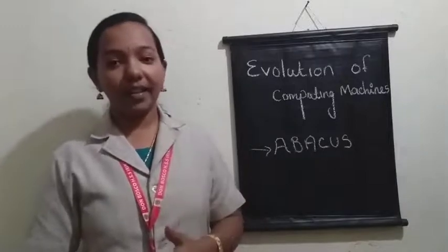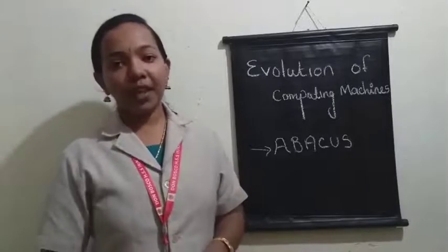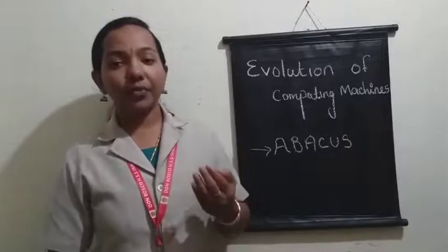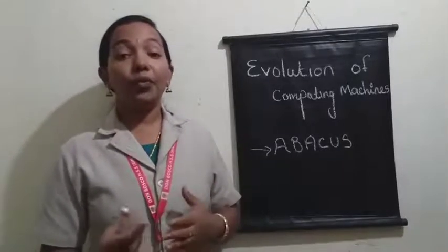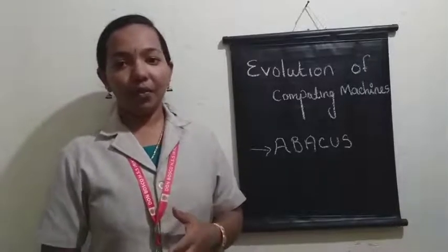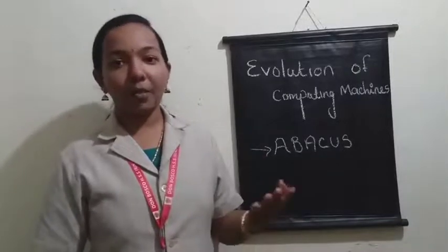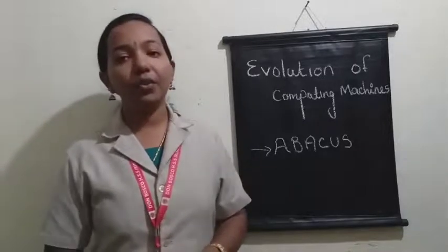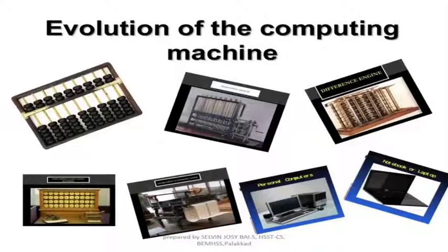We already studied the different number systems, from Egyptian to Hindu Arabic number system. After the positional number system, if a number system is available, then next we require a machine for performing operations on numbers. If numbers are available, then definitely it will lead to arithmetic operations. In this section, we are going to start a new topic called evolution of computing machines.